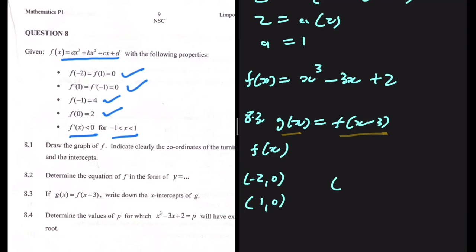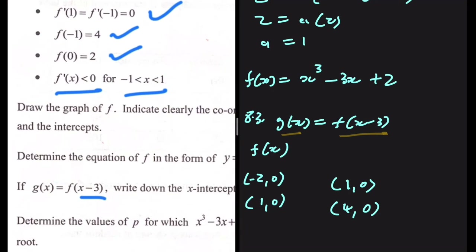So -2 + 3 = 1, giving the intercept (1, 0), and 1 + 3 = 4, giving the intercept (4, 0). These are the x-intercepts of g. You could also substitute (x - 3) in place of x in f(x) and get the same answer, but that would take much longer, so this method is easier.